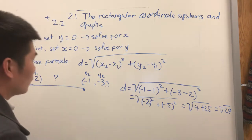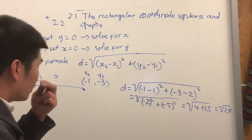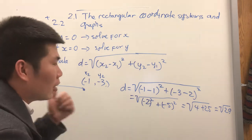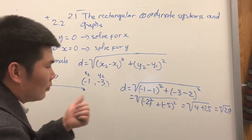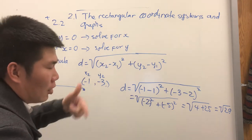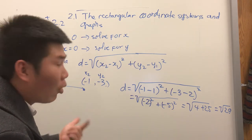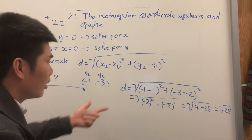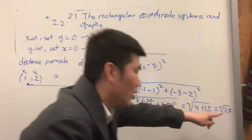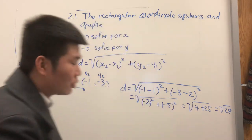Remember, distance is not a coordinate of the point — it has to be a number, a constant number.